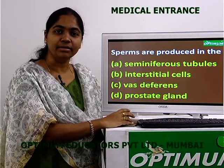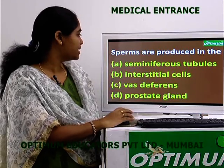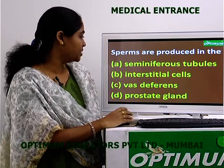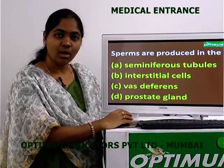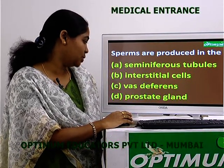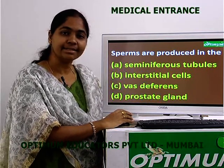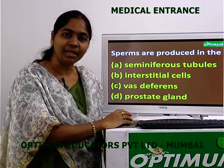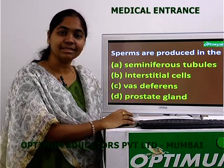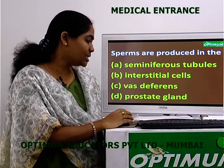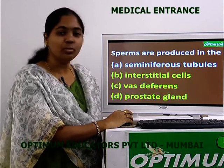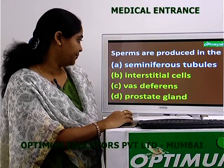Question 1: Sperms are produced in the — with four options: A) seminiferous tubules, B) interstitial cells, C) vas deferens, D) prostate gland. Interstitial cells relate to nutrition, not spermatogenesis. Vas deferens is a conduction system. Prostate gland is an accessory gland. That leaves seminiferous tubules as the correct answer.